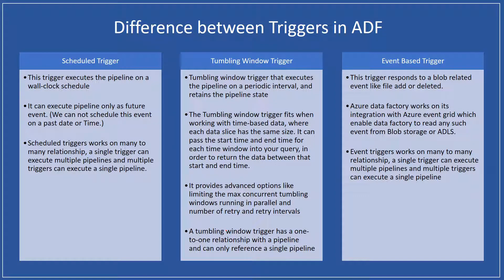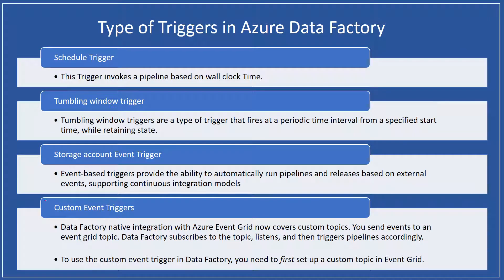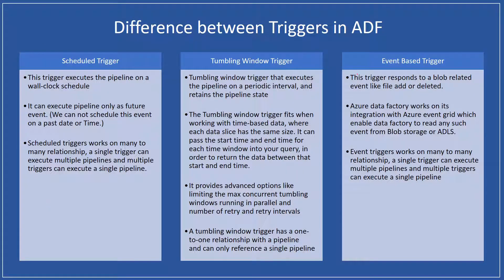The last two triggers you can see here are storage account event triggers and custom event triggers. Both work alike, so that's why in this comparison I have put them in a category of event-based triggers. Starting with the schedule trigger — schedule triggers are the basic triggers available in Azure Data Factory, and these triggers can execute a pipeline on a wall clock schedule.